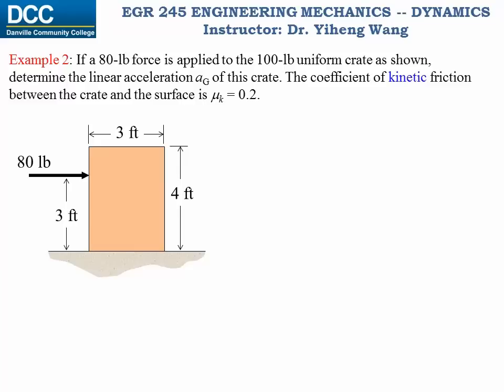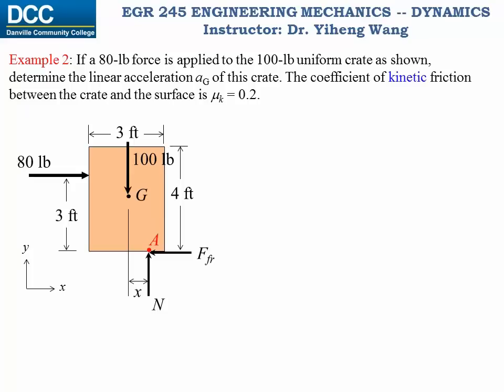Let's look at an example involving dry friction. We have a uniform 100-pound crate with dimensions shown; the coefficient of kinetic friction between the crate and the surface is 0.2, and an 80-pound force is applied. We need to determine the linear acceleration of the crate. The center of gravity is in the middle since the crate is uniform. We mark the weight force, the unknown normal force, and the frictional force on the free body diagram. The location of the normal force, point A, is unknown — we assume it is at a distance x from the center of gravity. From statics, if x reaches 1.5 feet, the crate tips over.